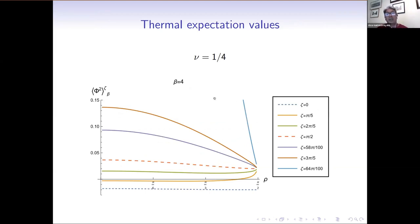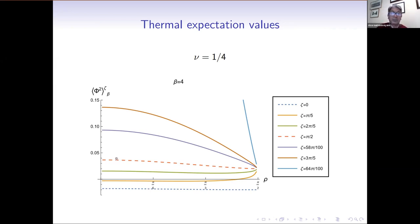For the thermal expectation values we have a very similar finding, with nu equals one quarter and beta equals 4. The dotted lines represent the Dirichlet and Neumann expectation values. Unlike the vacuum case, the thermal expectation values are dependent on the spacetime position — it's quite subtle for Dirichlet-Neumann, but they do progressively decrease as we approach the boundary. For all Robin parameters studied, as we approach the spacetime boundary, the thermal expectation values of the vacuum polarization approach the Neumann result, whereas Dirichlet keeps its own value. This was found for all values of nu and beta.